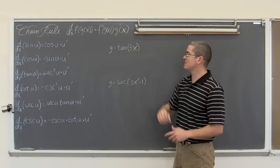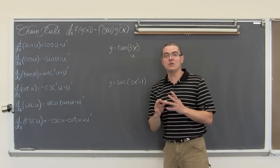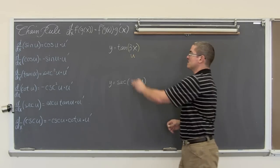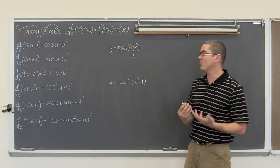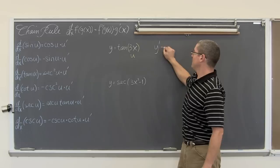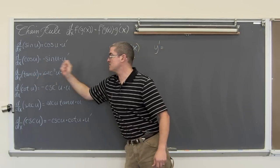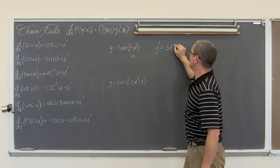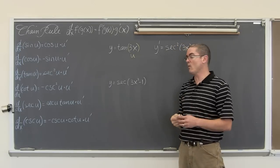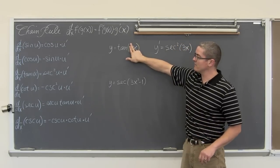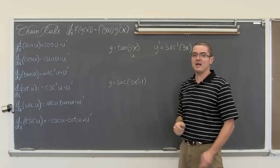So we have y equals the tangent of 3x. This 3x is our u — that is our inside function. It is the tangent of something. What is the derivative of tangent? Well y prime is going to be... the derivative of tangent is secant squared. So it is going to be secant squared of 3x. Before, it was just secant squared x, but now we have an inside function of 3x.